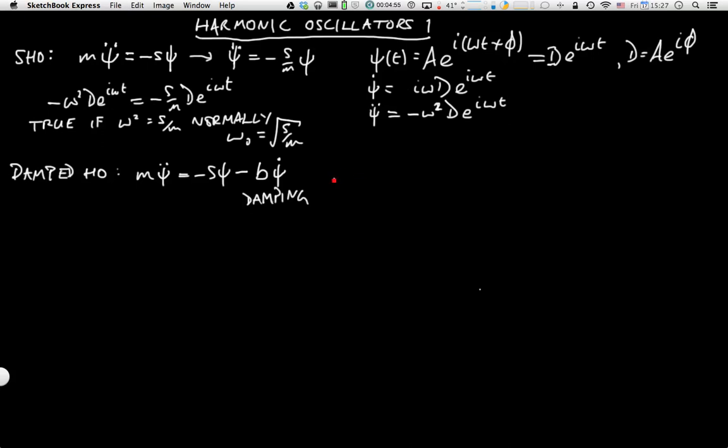We now have a term which removes energy from the system. When we substitute in the solution for ψ that we've had before, we get minus ω² D e^(iωt). I'm going to implicitly divide by m again. This equals minus s over m D e^(iωt).